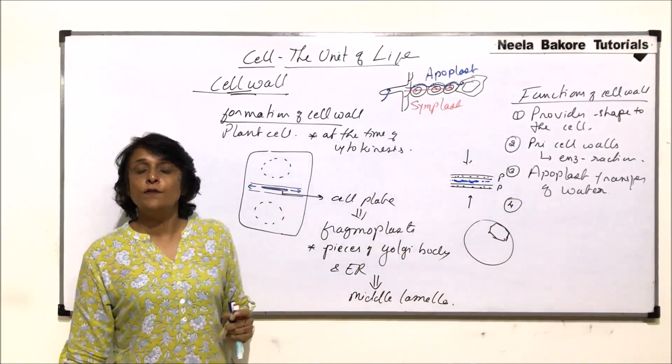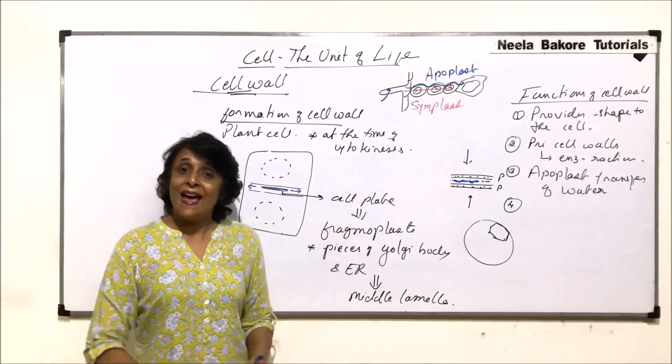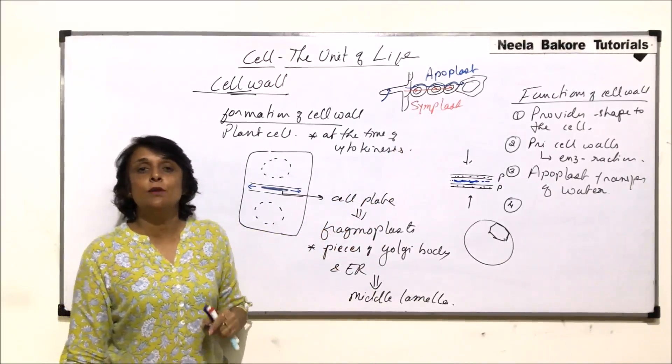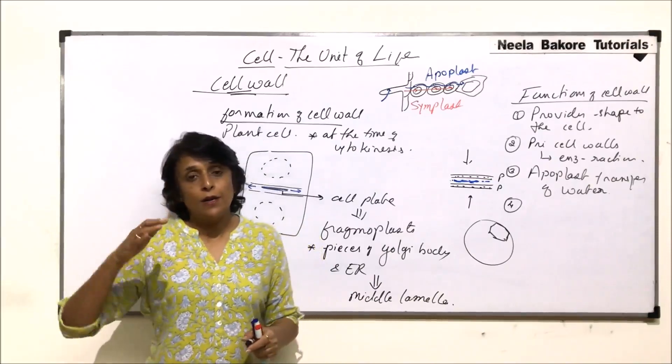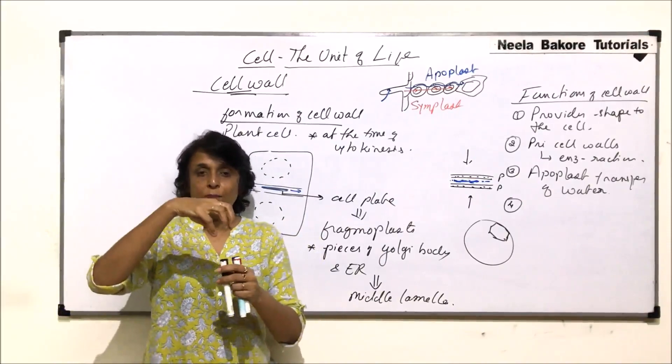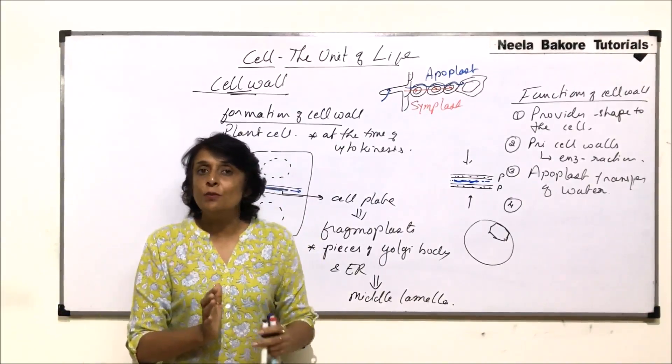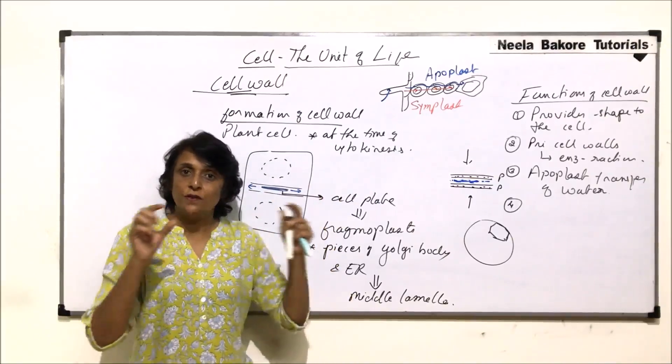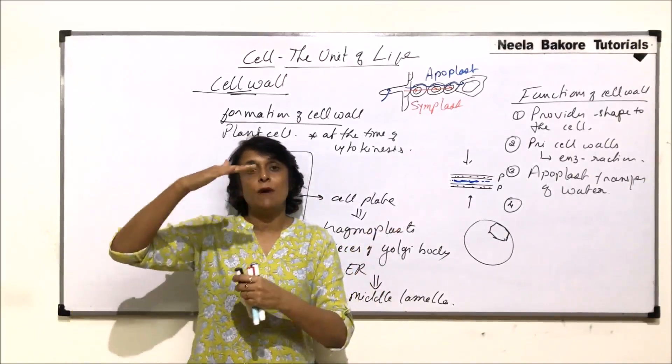So when we talk of the function of cell wall, we use that it helps in apoplast transfer or transport of water, and that is when water is moving only through the cell wall, not going into the cell. Fourth function: because of the cell wall, the cells have this rigid shape and probably this is one reason why the plants are able to attain such a great height.